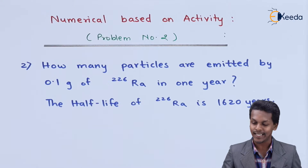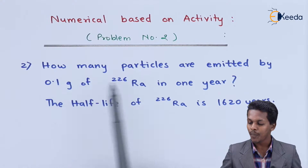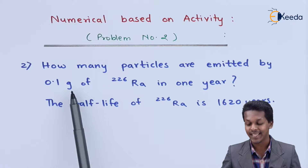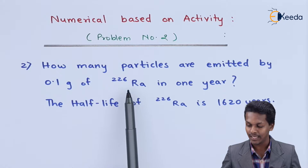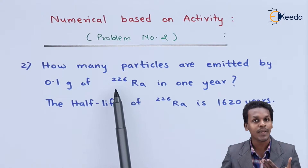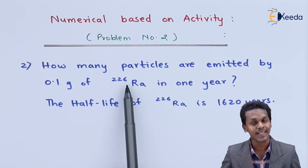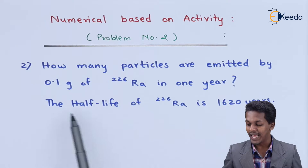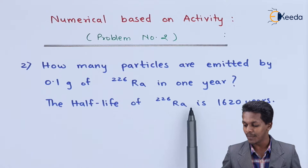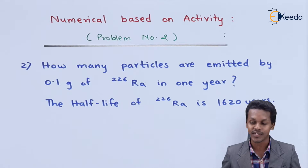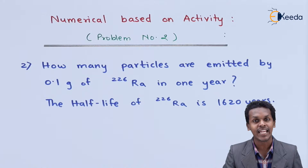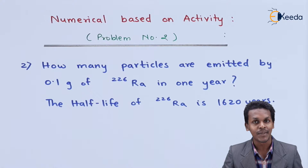The question given here is: how many particles are emitted by 0.1 gram of radium having atomic mass number 226 in 1 year? The half-life of radium is given as 1620 years. Now let's see how we can find out the activity of this radium.